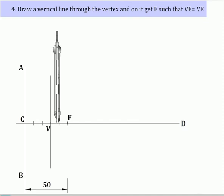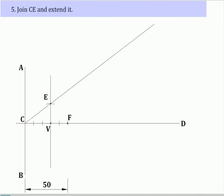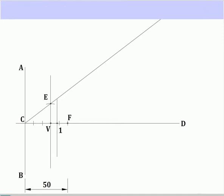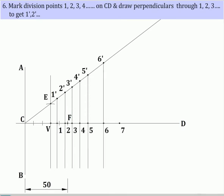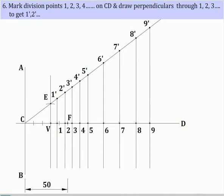Draw a vertical line through the vertex and on it get E such that VE is equal to VF. Join CE and extend it. Mark division points 1, 2, 3, 4 etc. on CD and draw perpendiculars through 1, 2, 3 etc. to get 1', 2', 3', etc.